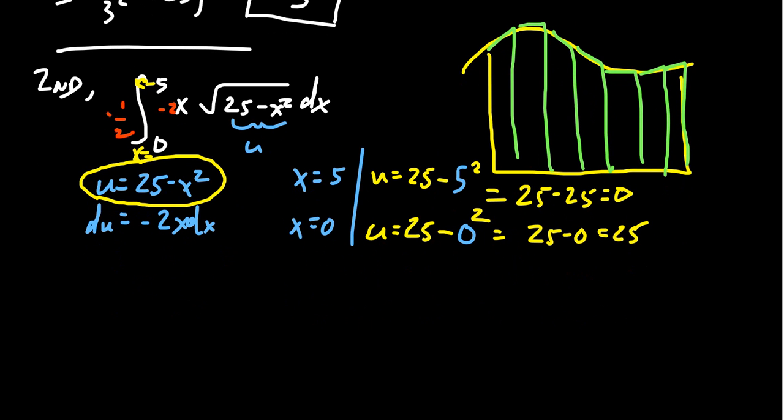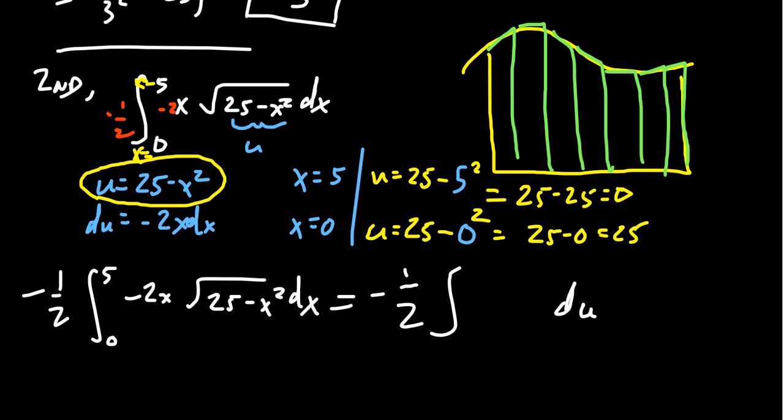If we approach the integral with this perspective, the original integral negative 1 half from 0 to 5 of negative 2x times the square root of 25 minus x squared dx, we could switch the limits when we switch the variable. The negative 2x dx becomes du. The square root of 25 minus x squared becomes u to the 1 half power. When x equals 0, u equals 25. When x equals 5, u equals 0. So we can change the bounds, and now we have a simpler definite integral.